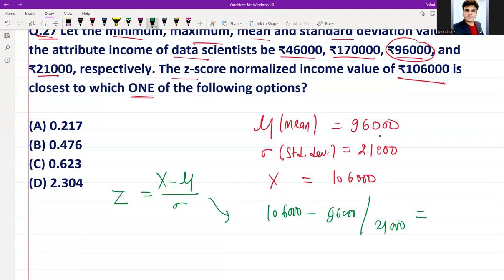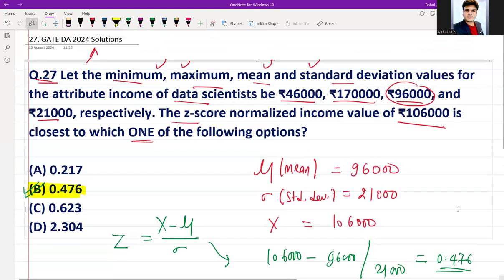If you see, this is option B. Easy question, I hope, easiest question. Option B is the correct answer for this question number 27.